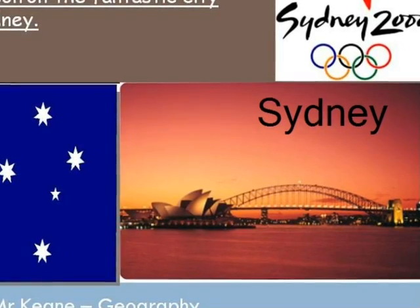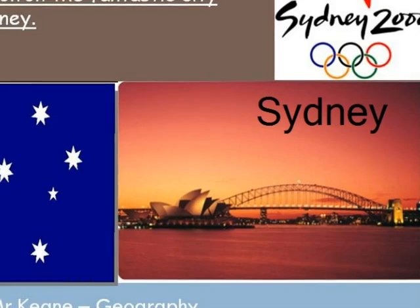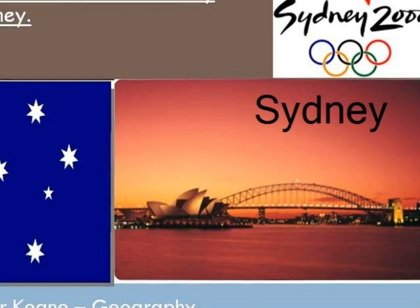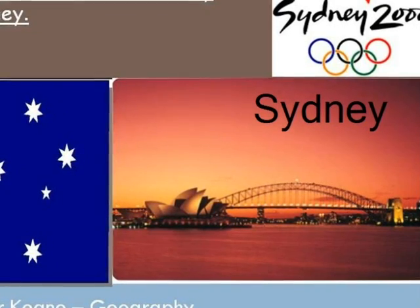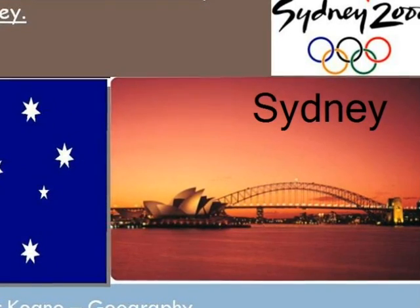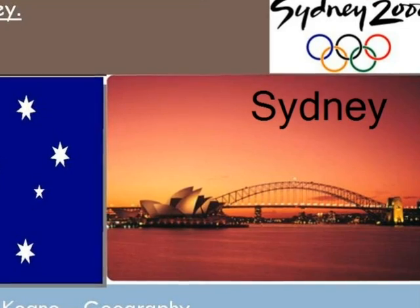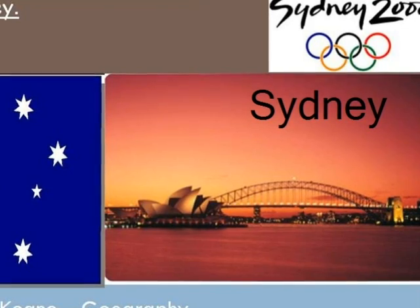The site of the first British colony in Australia, Sydney was established in 1788 at Sydney Cove by Mr Arthur Phillip.